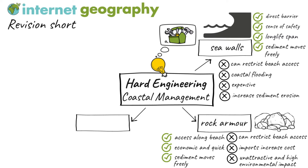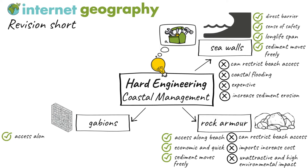Gabions are wire-meshed cages filled with pebbles or rocks. They are placed at the back of sandy beaches. As water enters the cages, wave energy is absorbed and dissipated. A social advantage of gabions is that they do not restrict access to people walking along a beach.